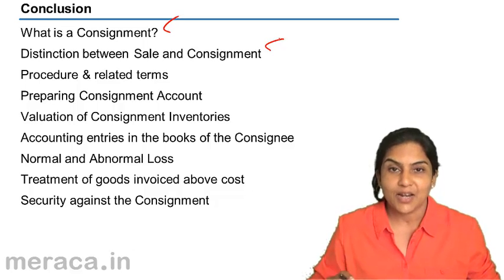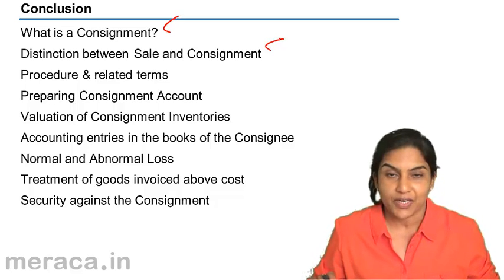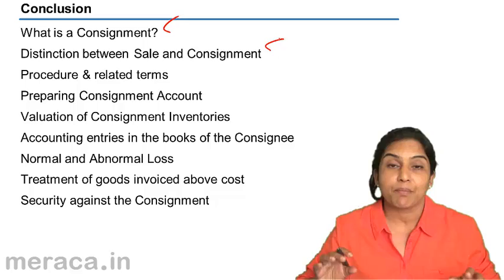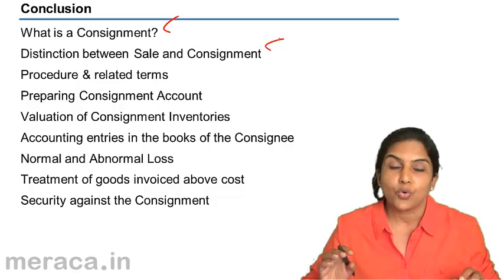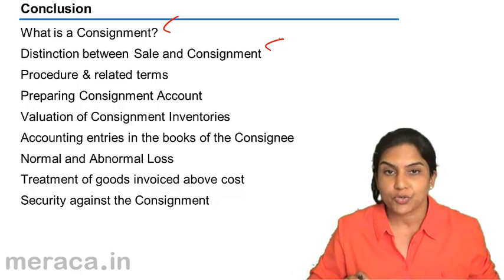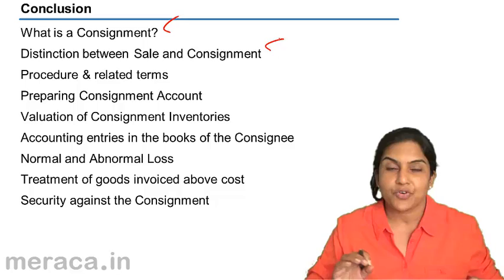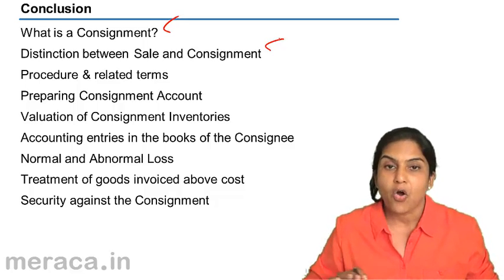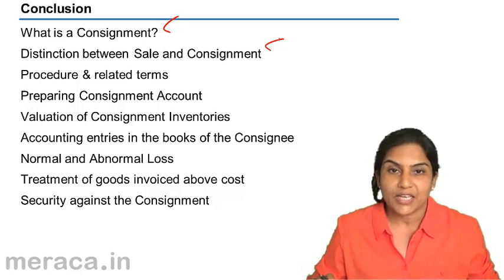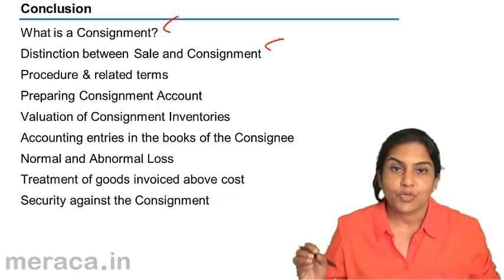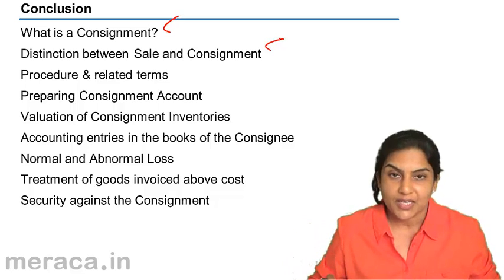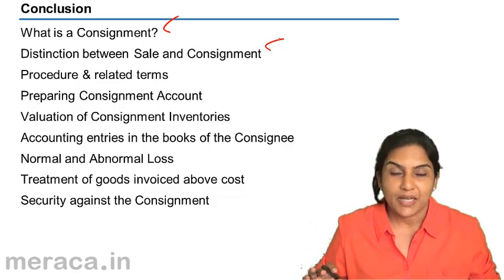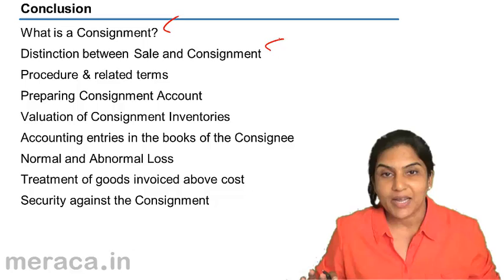But in a sale, once a sale transaction is effected, the buyer buys the goods, the seller sells the goods, and the ownership of the goods passes from the seller to the buyer. All subsequent expenses incurred by the buyer for safeguarding or maintaining the asset are the buyer's expenses.